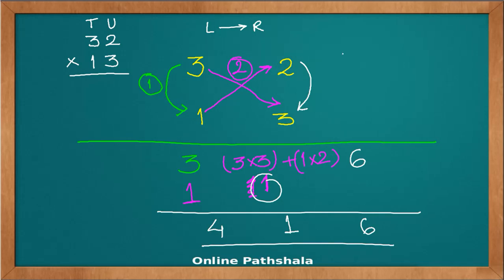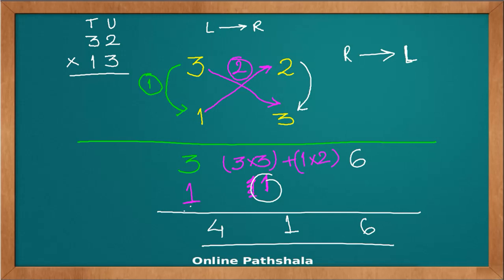It is intuitive that going from right to left also gives the same answer. The only difference is you need to keep track of your digit positions from where you start. So starting from right to left: 2 multiplied by 3 gives 6 in the units place, the cross product 3×3 plus 1×2 goes in the middle, any carry moves to the next position, and finally 3 into 1 gives the hundreds digit.